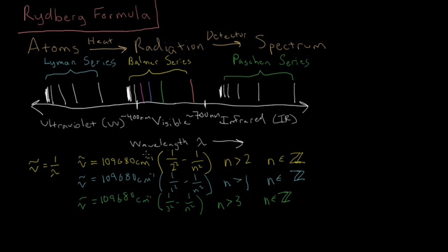So then, a scientist named Rydberg came along and made a more general formula for this series. So first we define this constant, the Rydberg constant, as this 109680 wavenumbers.